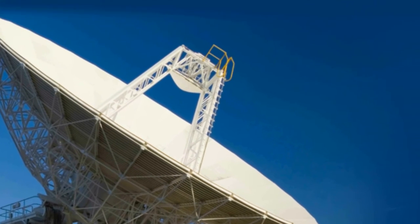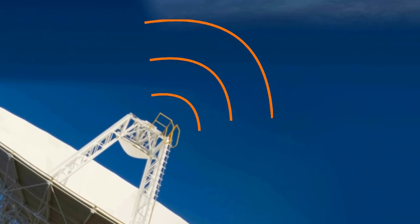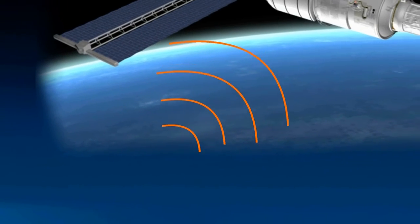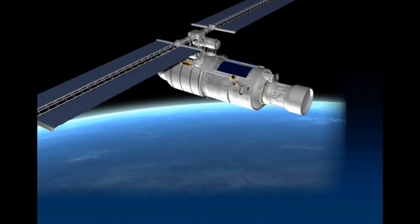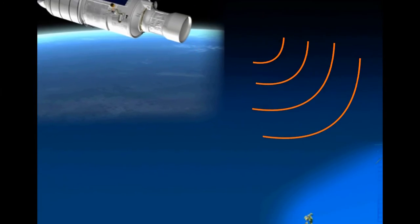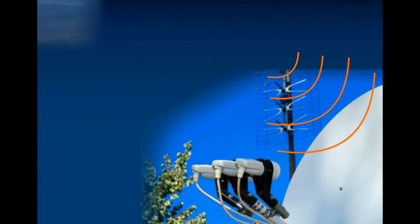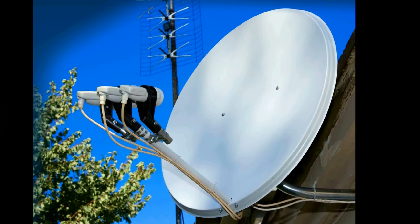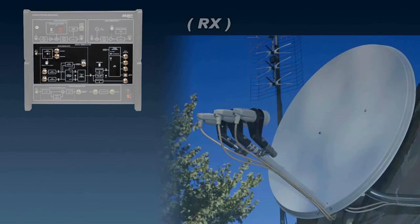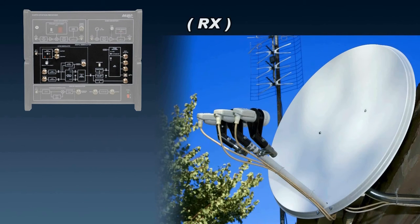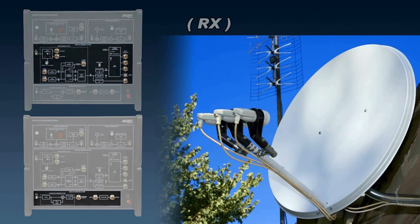Our satellite repeater station takes the uplink signals from up to 6 earth stations, shifts them to a lower frequency, amplifies them, and then retransmits them as the downlink signal. The earth station receiver converts the 9 GHz downlink signals and also includes the needed digital and analog demodulators.